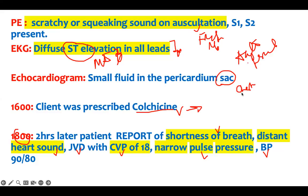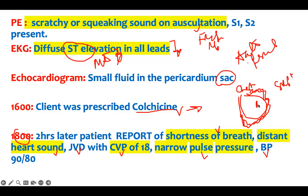Think about it: the pericarditis is causing constriction around the heart, squeezing it, so the heart cannot pump. Therefore your systolic blood pressure goes down. Because blood cannot be pumped forward, it backs up into the lungs, causing shortness of breath. It then backs up to the right side, causing right heart failure and systemic congestion — that's why the CVP is high.